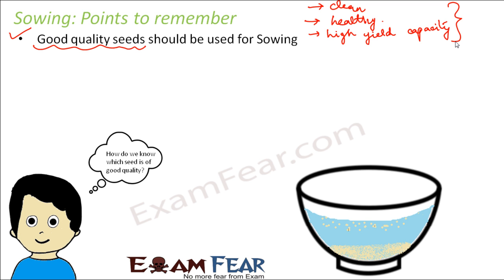Objects float only when they are very light. The lighter seeds come to the surface while the heavier seeds sit at the bottom. The seeds that are lighter float because they are basically hollow — there is nothing inside them. These hollow, lighter seeds are damaged seeds and are not of good quality. The seeds that settle at the bottom are the good quality seeds. This is how you can determine whether seeds are of good quality or not.